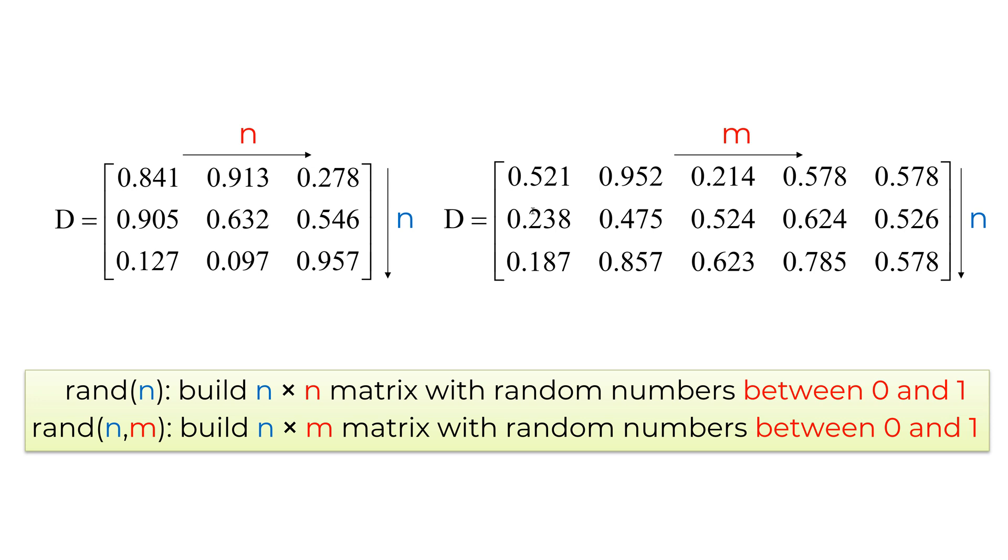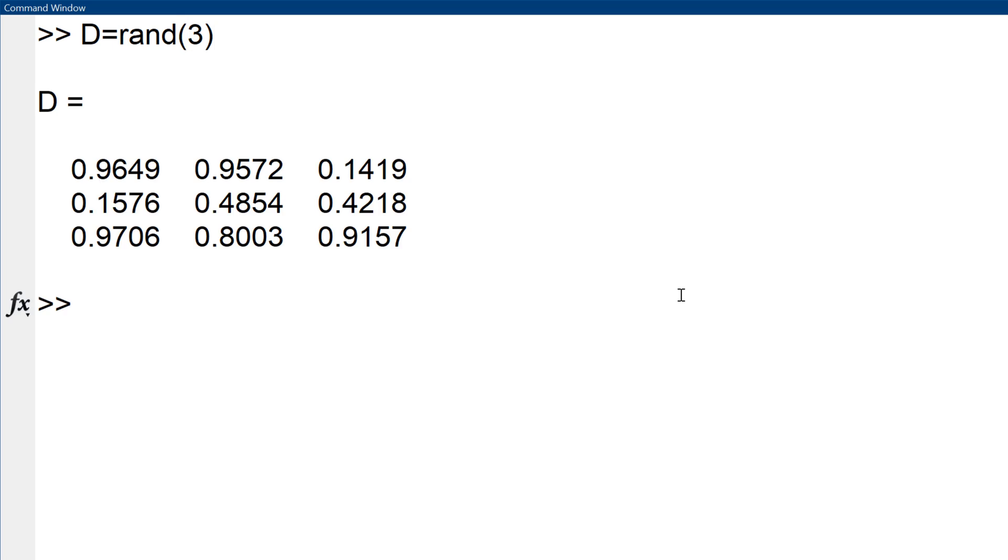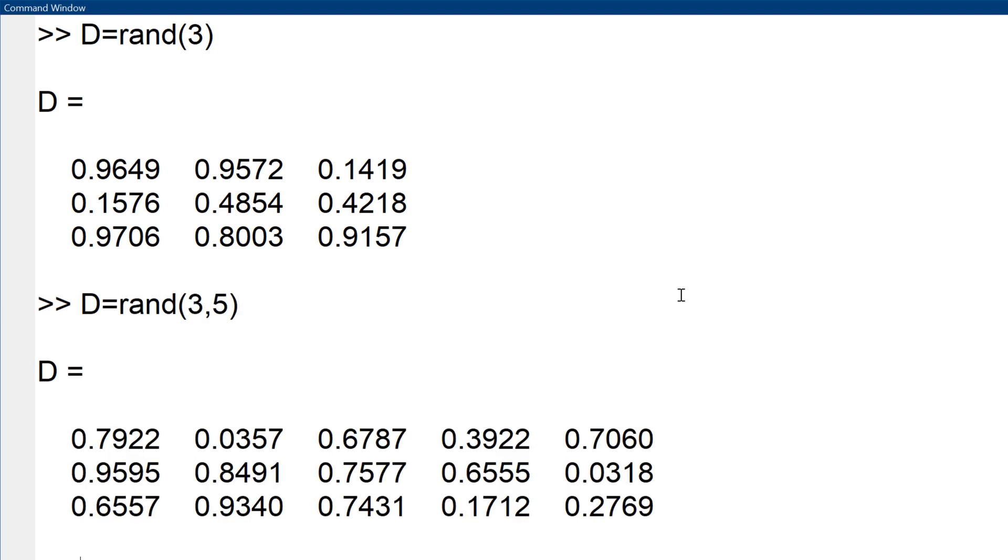If you have random numbers in your matrix, as shown in the slide, you can create such a matrix using rand(N) or rand(N, M) for a square or non-square matrix. For example, D equals rand(3) create 3 by 3 matrix D with random numbers between 0 and 1, and D equals rand(3, 5) create 3 by 5 matrix D with random numbers between 0 and 1.